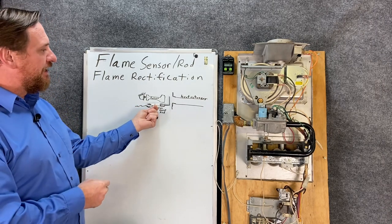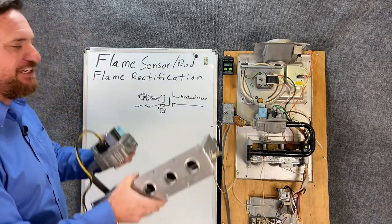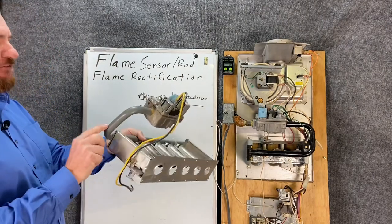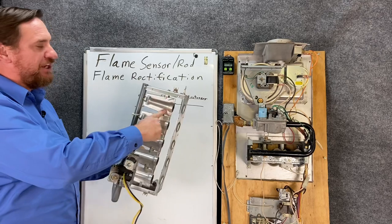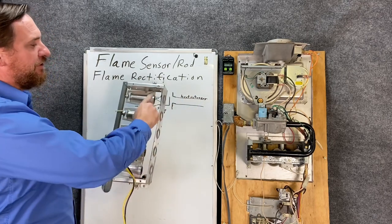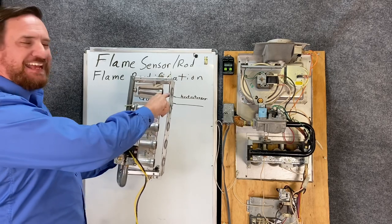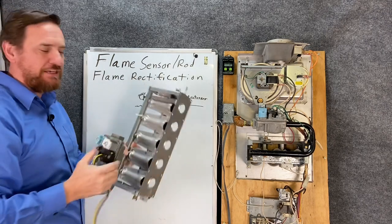So I have this really beautiful art drawing here, but let me tell you what I'm trying to draw so you understand what you're actually looking at. So here we have our manifold, and we've got our burners, in-shot burners here, and my heat exchanger would be on this side. The flame sensor is between the burners and the heat exchanger. So when I'm drawing this, this is what I'm talking about.